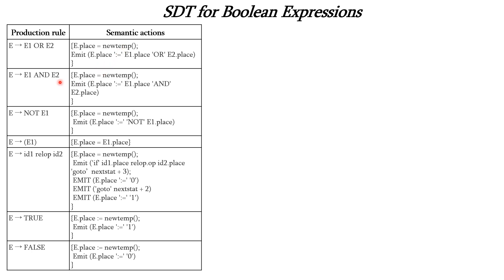Next we have AND operation. In the same way, a new temporary variable is created in the position of E, the operation is performed, and the result is stored in E.place. Next we perform the NOT operation similarly. For the assignment operation, three-address code is not generated; the value in E1 is simply assigned to E.